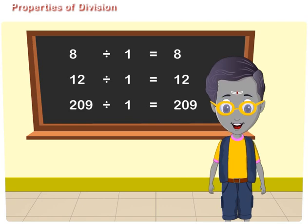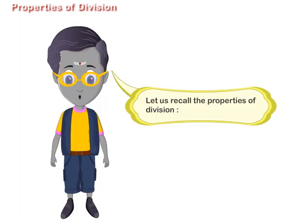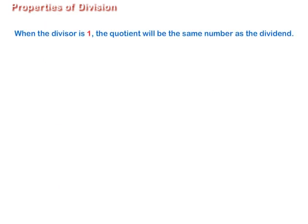Properties of Division. Let us recall the properties of division. When the divisor is 1, the quotient will be the same number as the dividend.